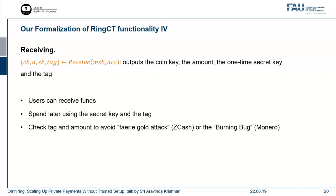For receiving: the receiver runs the receive algorithm, taking his master secret key and the target account specified in the transaction. The algorithm outputs the coin key, the amount, the one-time secret key, and the tag — with this information the funds become spendable. An additional check ensures that when a receiver receives funds multiple times, the tag of every receipt is different; otherwise he receives money twice to the same tag but can only spend that tag once.